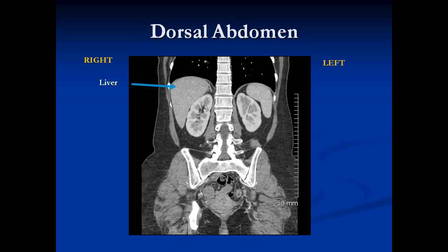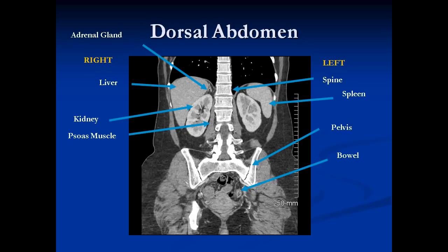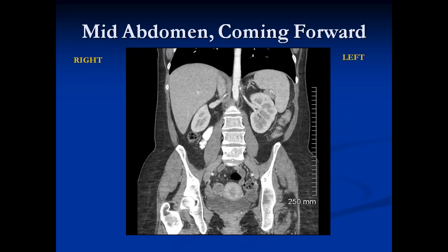We have the liver to the right again, and the kidneys. Right on top of each kidney is the adrenal gland — that little hat-shaped structure. Immediately in front, central to the kidneys, is the psoas muscle. These psoas muscles are important because we can see them on plain films and they tell us the retroperitoneum is okay. This is the spine. We can see the spleen on one side, the bony pelvis and sacroiliac joints, bowel sitting within the pelvis, and the gluteus muscles on either side.